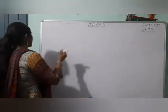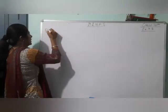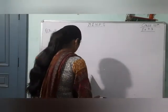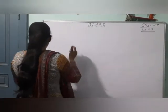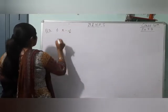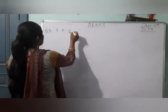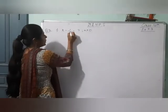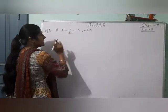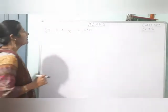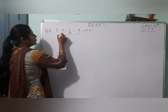Today I am starting from question number 3 of this exercise, which is: find the roots of the following quadratic equations. First part is x minus 1/x equal to 3, where x is not equal to 0. Why did we say that x is not equal to 0? Because if x is 0, then 1 by 0 is infinity.